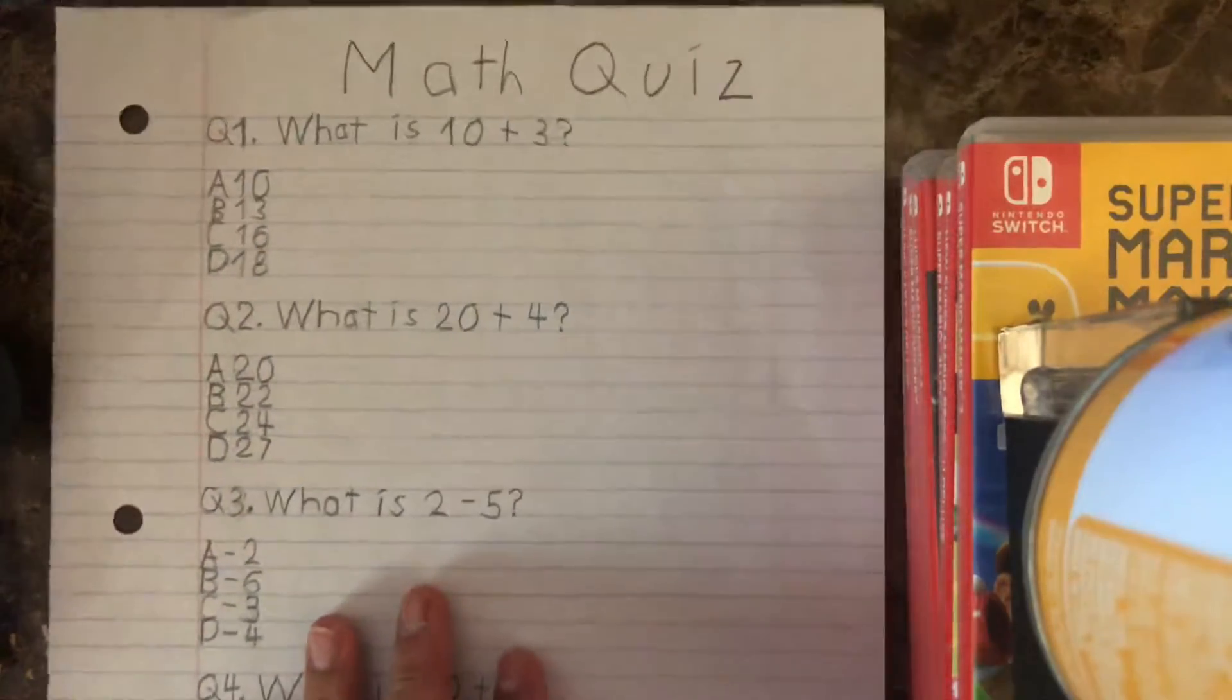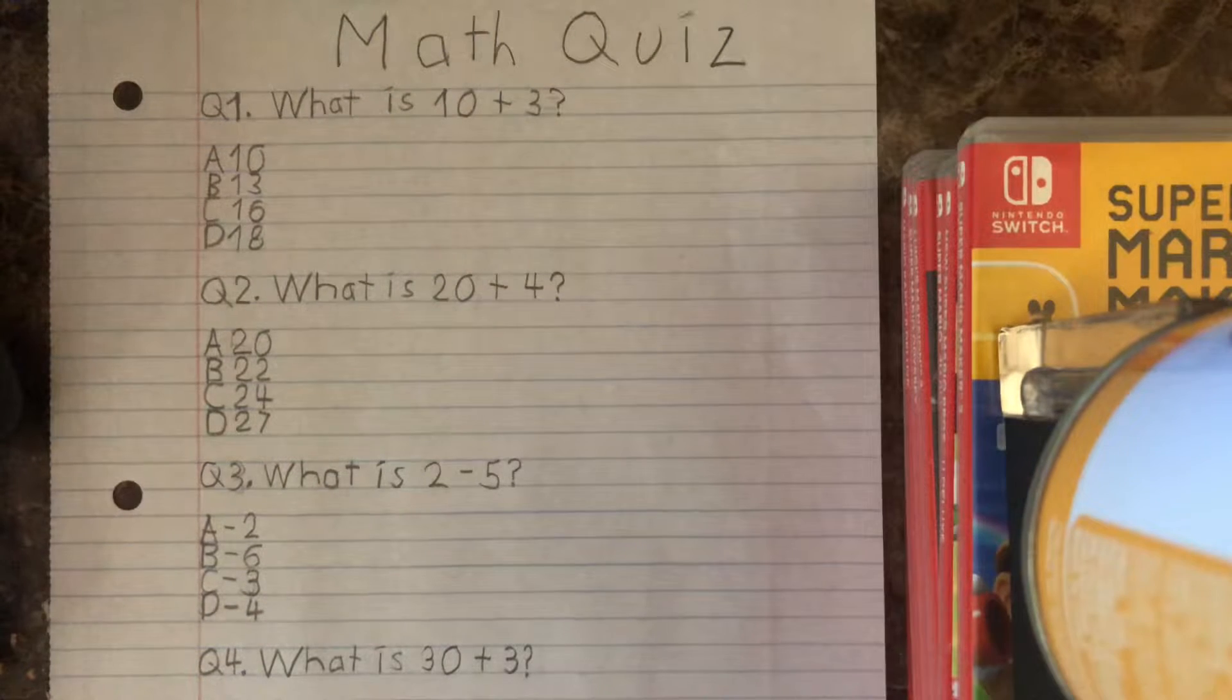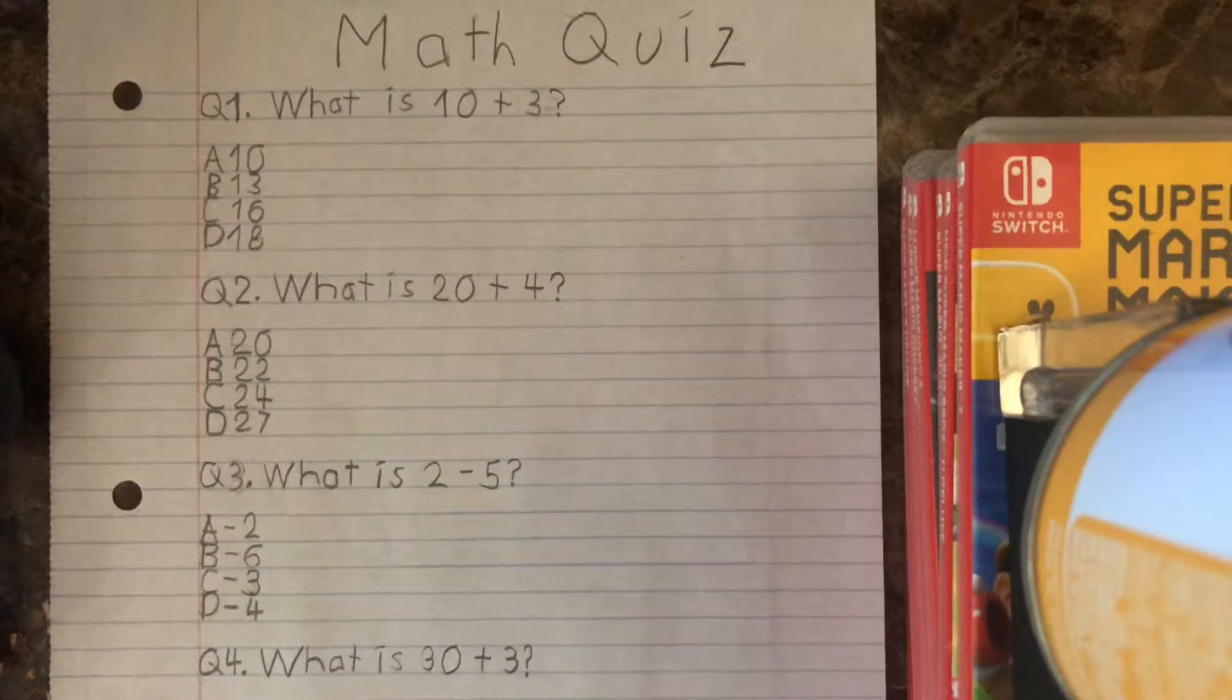Alright, question number three. What is 2 minus 5? A, negative 2, B, negative 6, C, negative 3, or D, negative 4? Oops, it's D, negative 4. Alright, what do you think of question number three guys? Just comment.